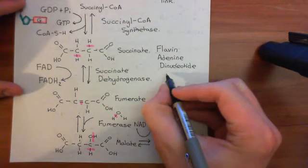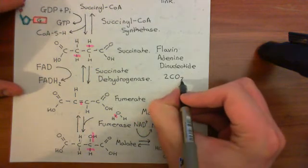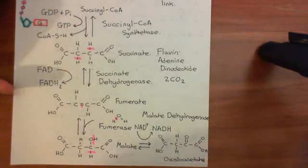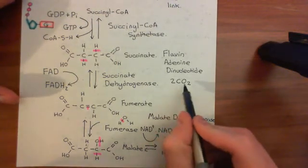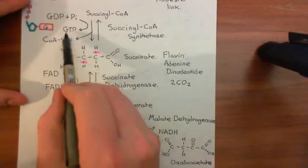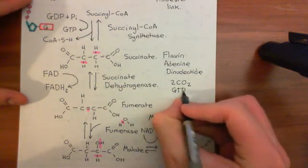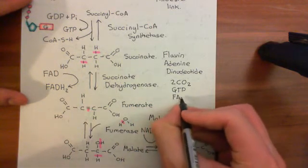Well, we know we must have produced two molecules of carbon dioxide, because that was the only way we got rid of the carbon atoms from the original acetyl-CoA molecule that we brought in. So we know we've produced that, but what else have we produced? Well, we produced this one molecule of guanosine triphosphate, so we'll add that on. We produced this one molecule of reduced flavin adenine dinucleotide, so FADH2 here.